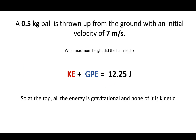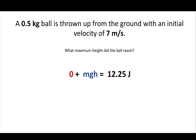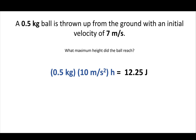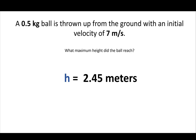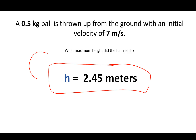At the top, all the energy is gravitational and none is kinetic, so KE equals zero. GPE is still mgh. Plugging in the numbers — we know the mass and g equals 10 — we do simple algebra to find the height. The ball goes up 2.45 meters. That is the maximum height the ball reached. That was the first problem.